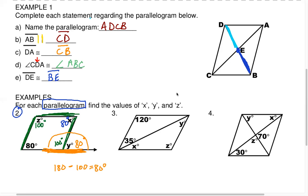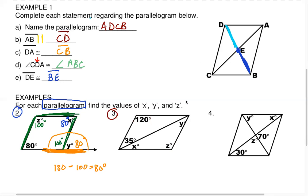We have found all the missing variables in number two. Pressing on to number three — again, you can start anywhere. You have to be a detective. We have 120 degrees here, so that has to be the case for the opposite corner — Z has to be 120. Opposite angles are congruent.